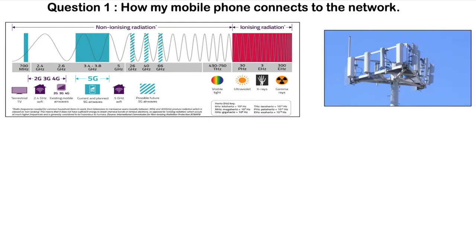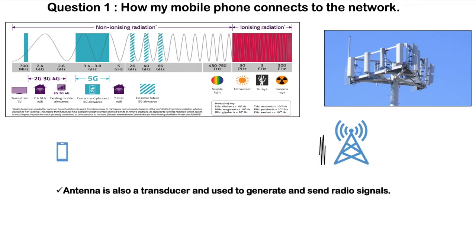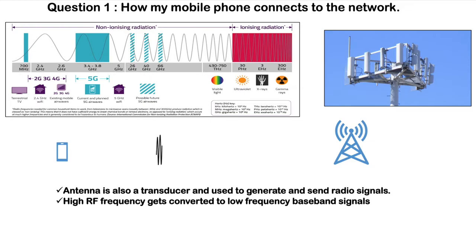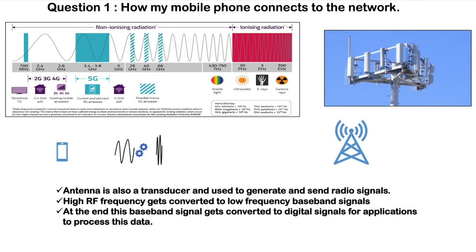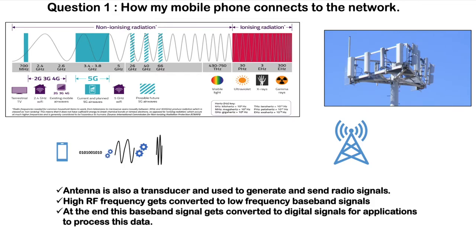This is how a typical mobile tower looks like. Our mobile phones have an antenna, which is a transducer device used to generate as well as send audio signals. The frequency over which the mobile tower and the phone communicate is very high and can go into the gigahertz range. We don't have devices that can do this high rate of analog-to-digital processing, so our mobile phones have to convert these signals to moderate frequency signals, also called baseband signals. At the end, these signals get converted into digital signals for applications to process the data.